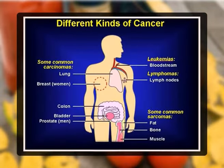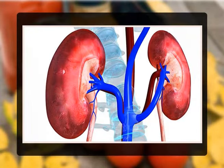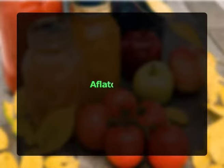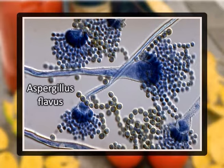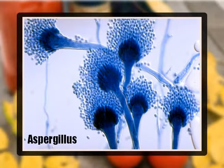Mycotoxins can cause chronic effects such as various cancers, immunosuppression, growth retardation, birth defects, and renal dysfunction. Aflatoxin is produced by the mold Aspergillus flavus. Commodities with high potential for aflatoxin contamination include tree nuts, peanuts, peanut butter, figs, and corn; contaminated feed can also lead to elevated levels in milk. The proliferation of Aspergillus and corresponding production of aflatoxin are affected by drought during the growth season and high humidity during storage.